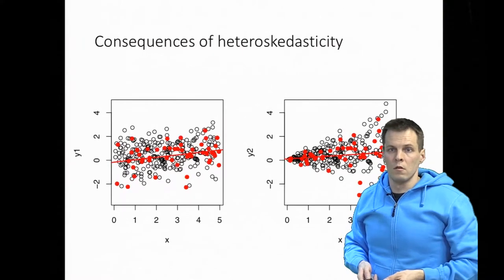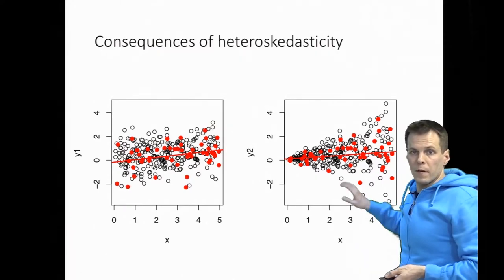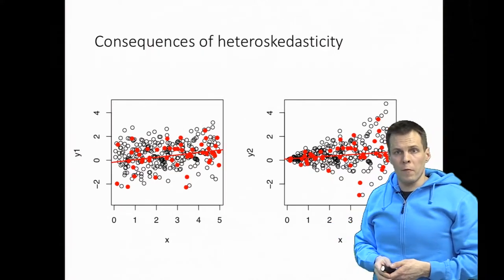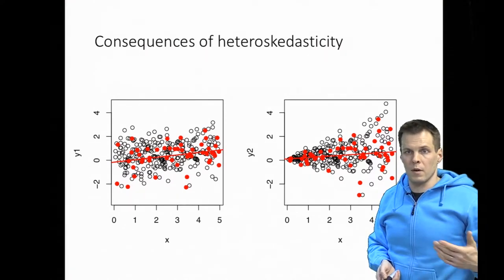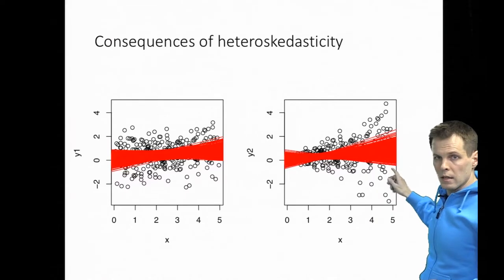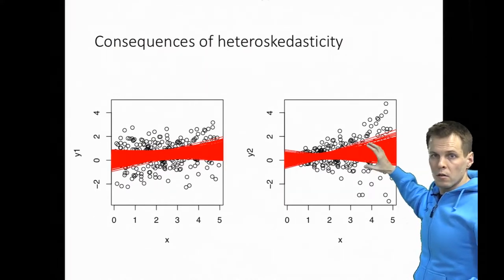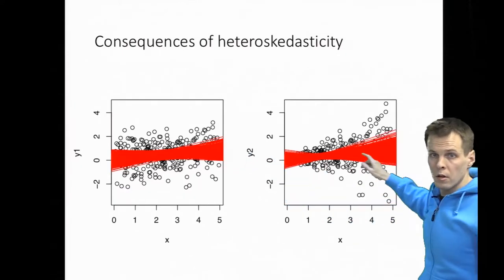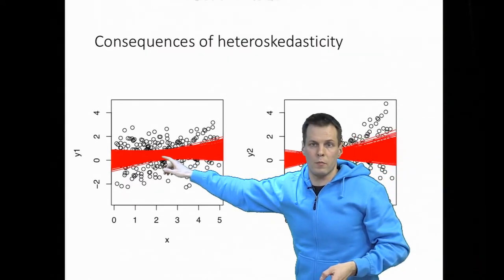When we estimate a single regression model, the results look pretty much the same — a sample of 50 observations from either side produces similar-looking regression lines. The problem of heteroscedasticity emerges when we take repeated samples from the same population many, many times. In the heteroscedastic case, the regression lines are much more spread out, so the slope varies a lot more across repeated samples than it does in the homoscedastic case.